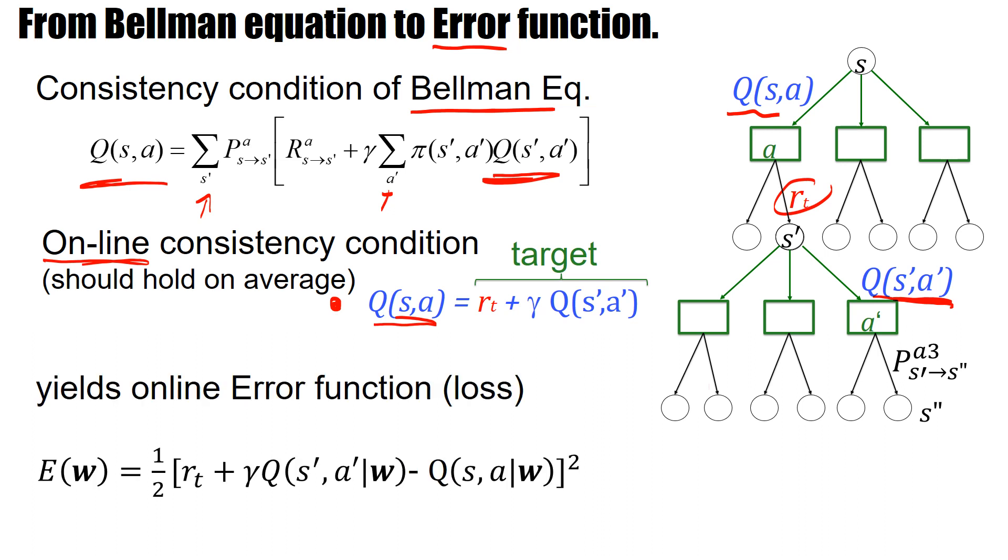Now the error measure should be a quadratic measure because the differences can be positive and negative. So I square this and now the same target appears here. I just have rewritten it in a form that I highlight that there is dependence on my set of weights, on my set of parameters.